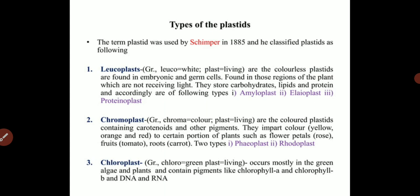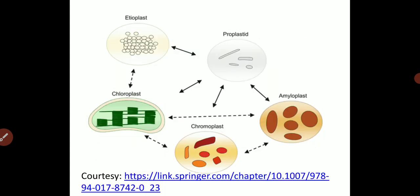The third type is chloroplast, which is very important for the synthesis of food molecules in any photosynthetic organism. Chloroplast is found in the green parts of the plant — leaves, stems, nodes, internodes, and apical meristems. Chloroplast contains the pigments chlorophyll a and b, which are responsible for absorbing sunlight at particular wavelengths. Together with water and carbon dioxide, chloroplast drives photosynthesis.